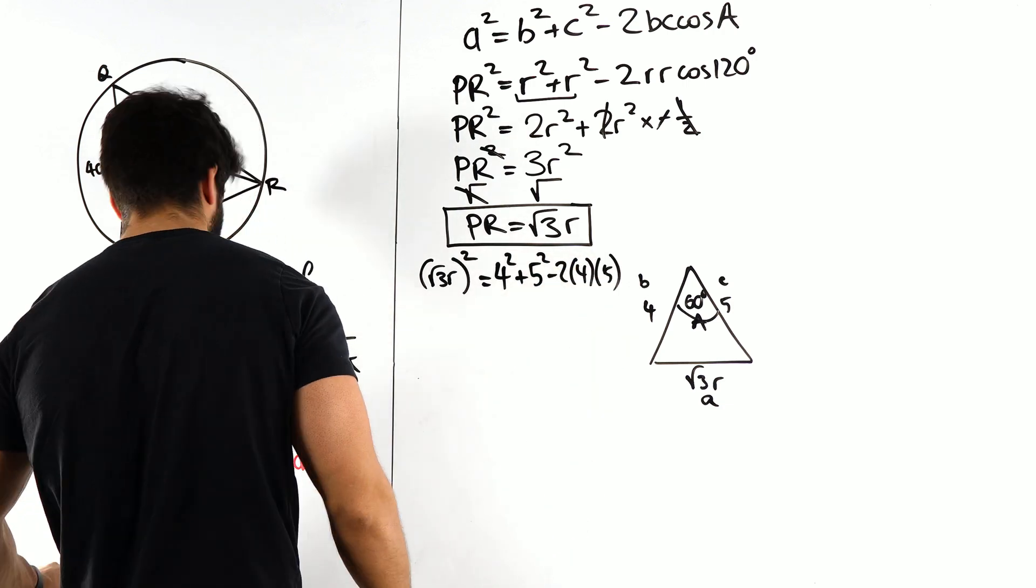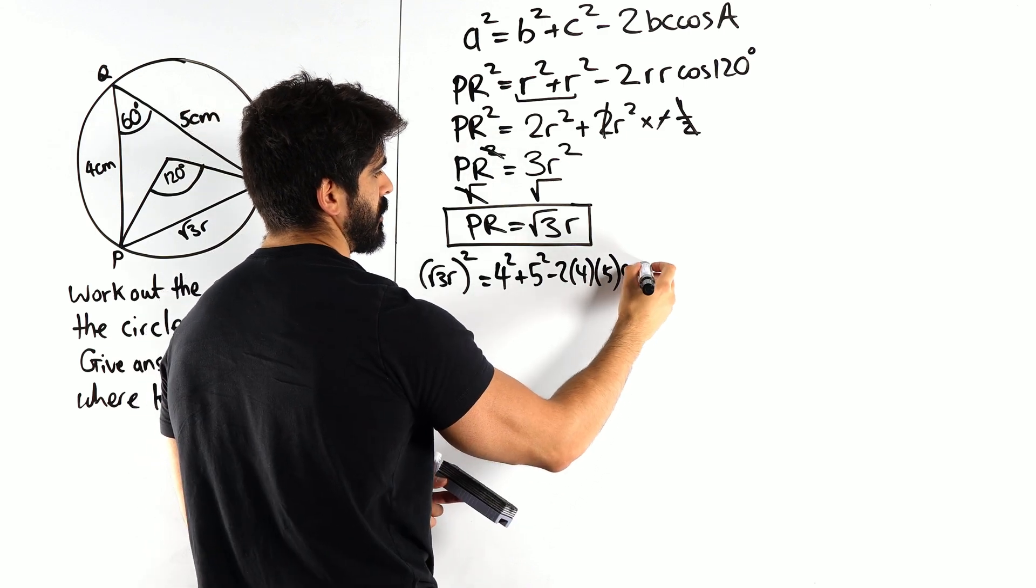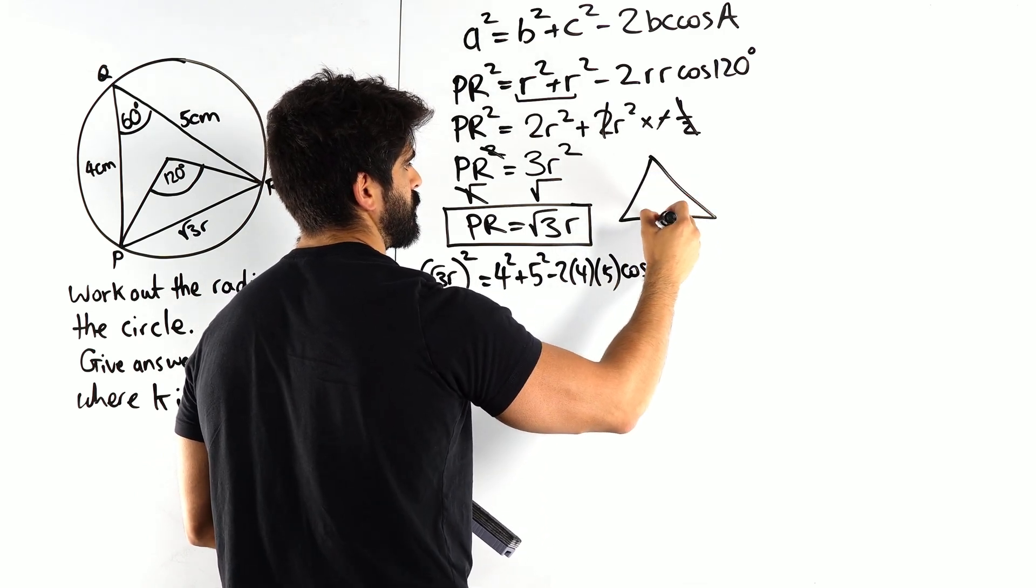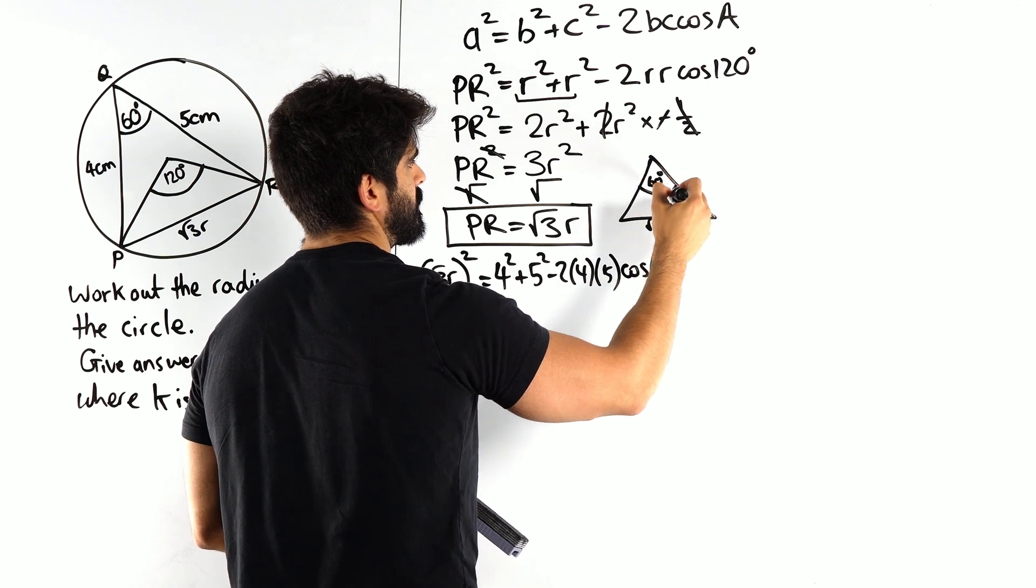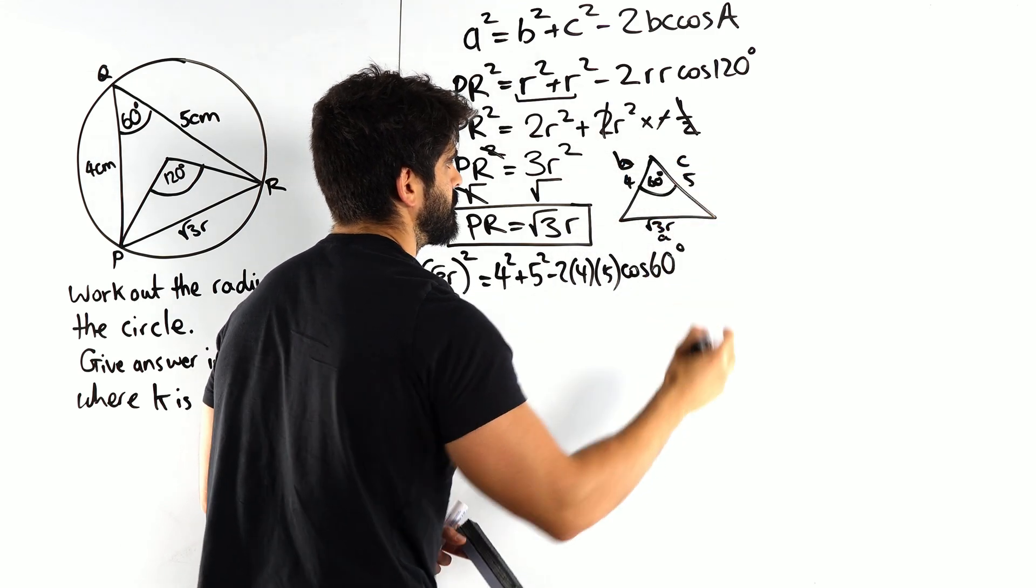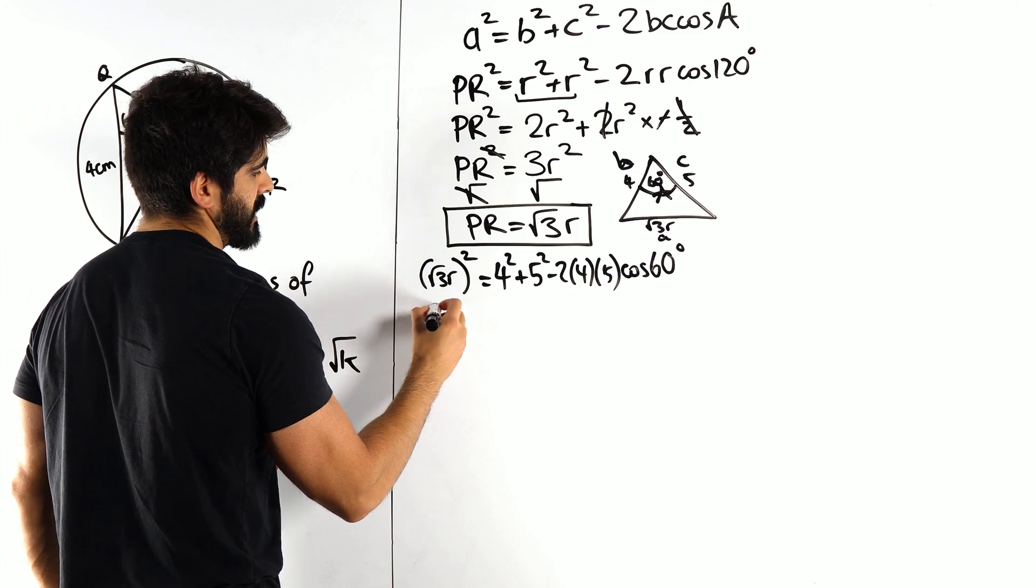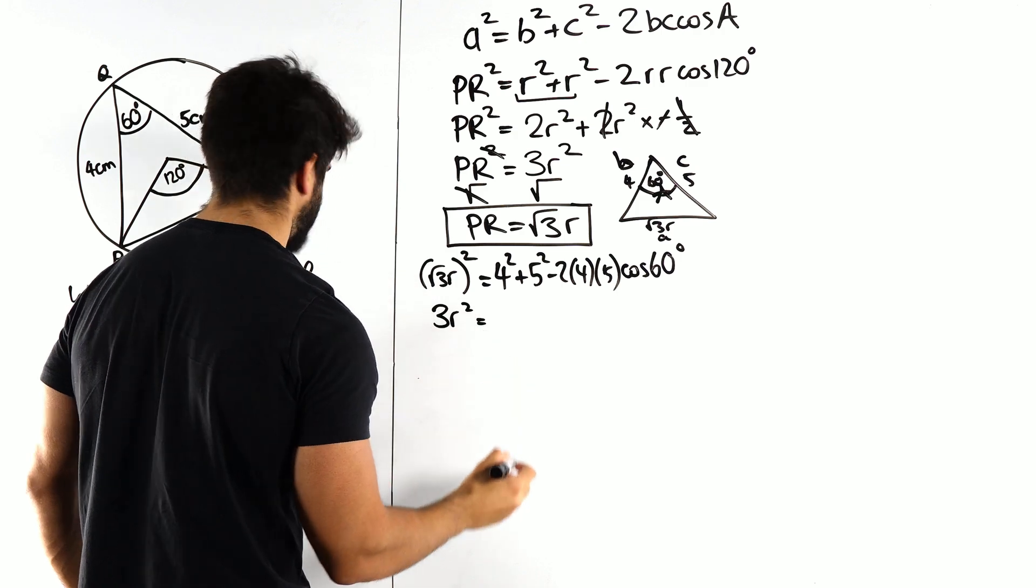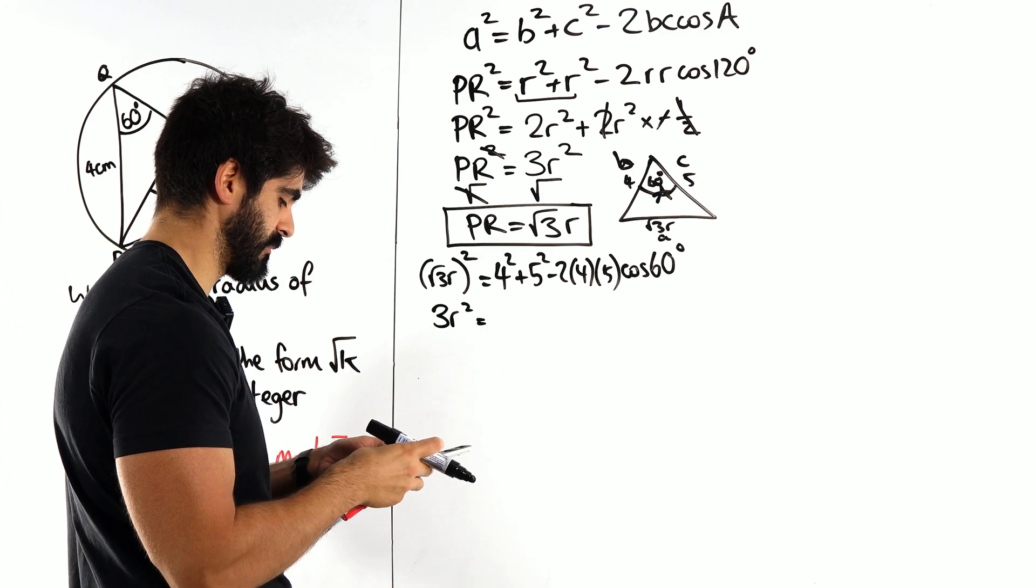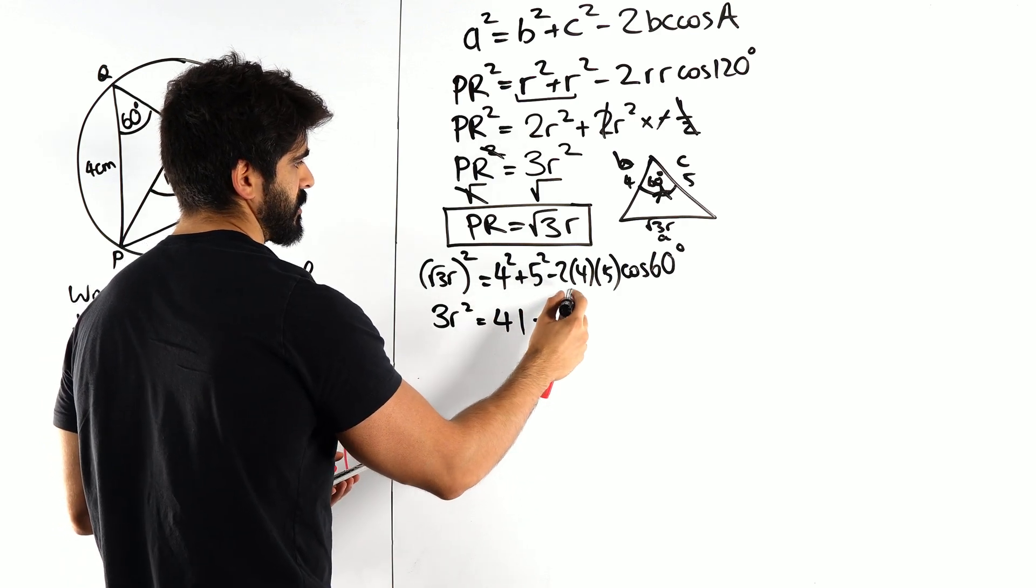And I'm running out of space. 2bc cos of the angle that was 60 degrees. I'll redraw the triangle: root 3r, 60 degrees, 4 and 5. So we know that when we square this, we get 3r squared is 4 squared plus 5 squared, which is 41. 41 minus 2 times 4 times 5.